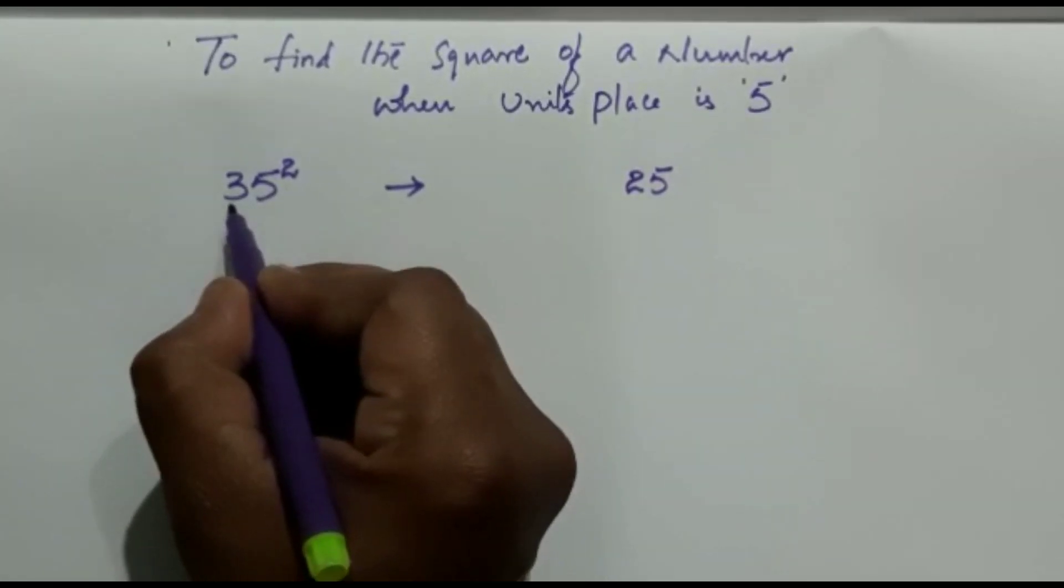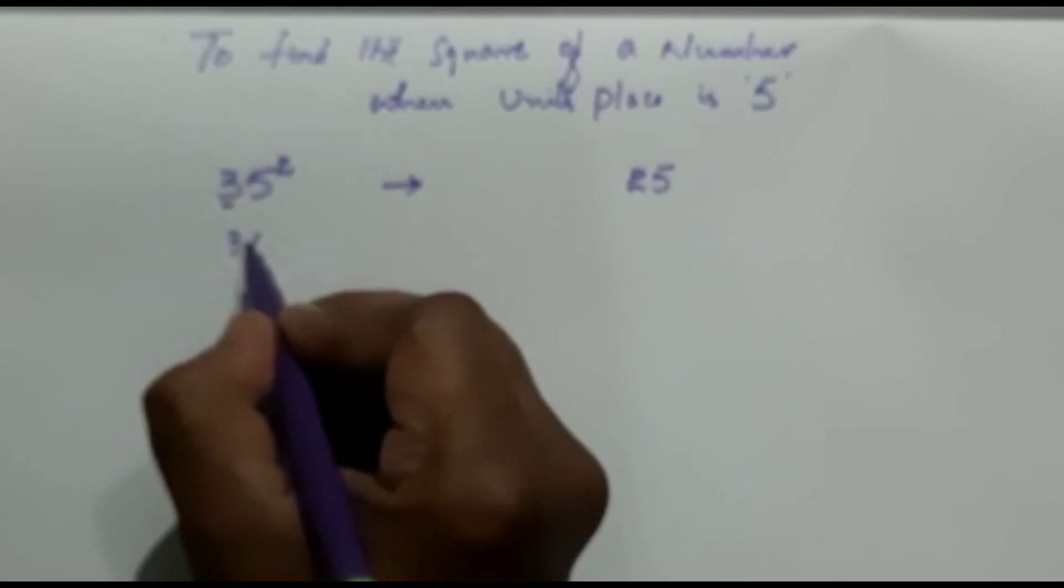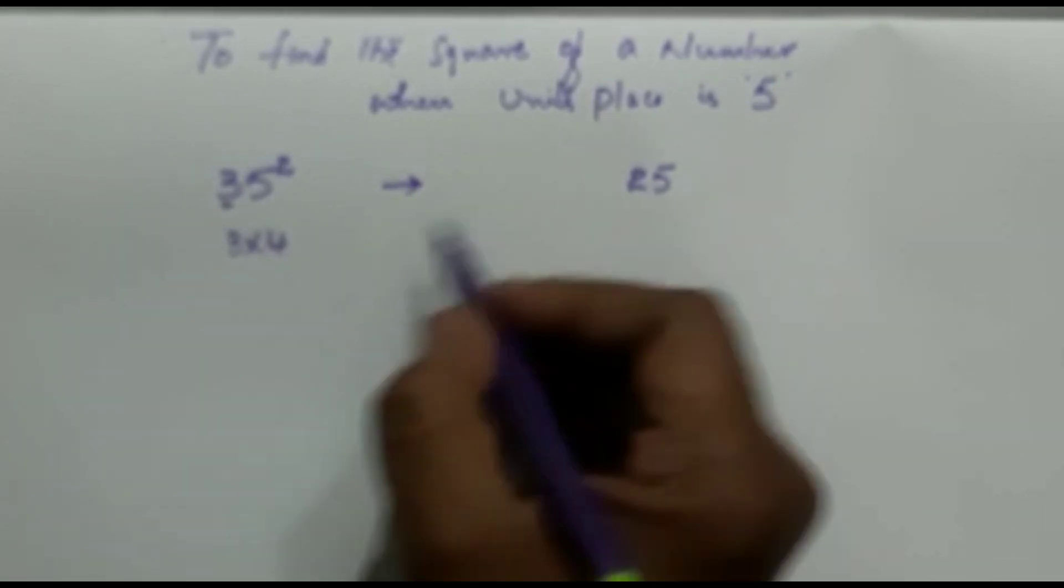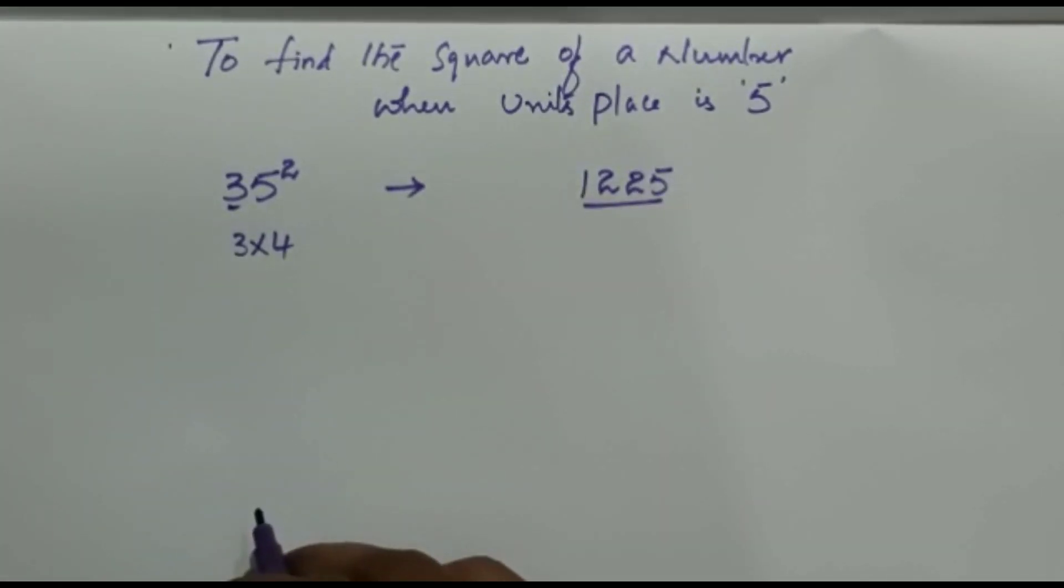And here see, 3 is there. So we have to take the next digit of 3, that is 4. So 3 into 4 is 12. So write down here. So this is the square of 35.